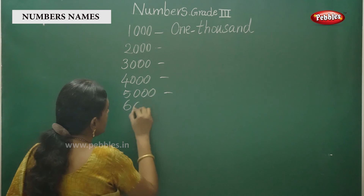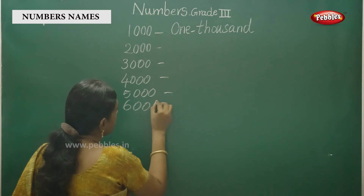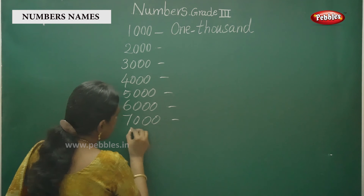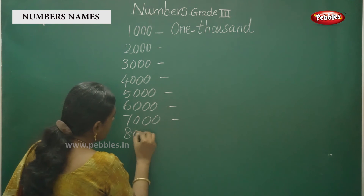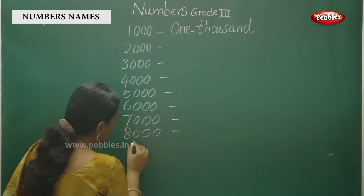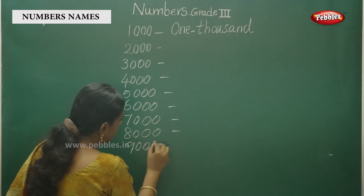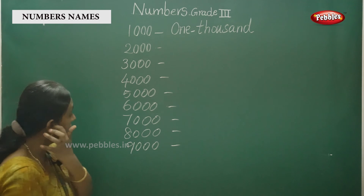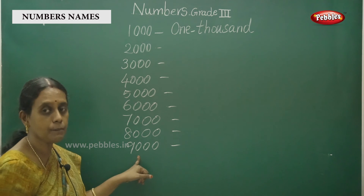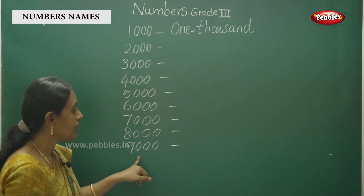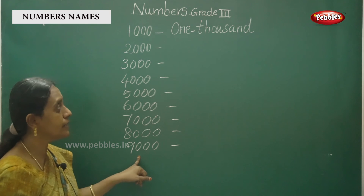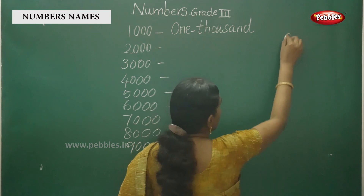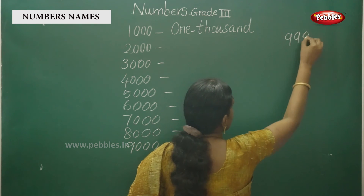Write all the number names: 3,000 — four thousand, 5,000, 6,000, 7,000, 8,000, 9,000. Write the numerals also. You have to complete 9,999 in the numerals series.